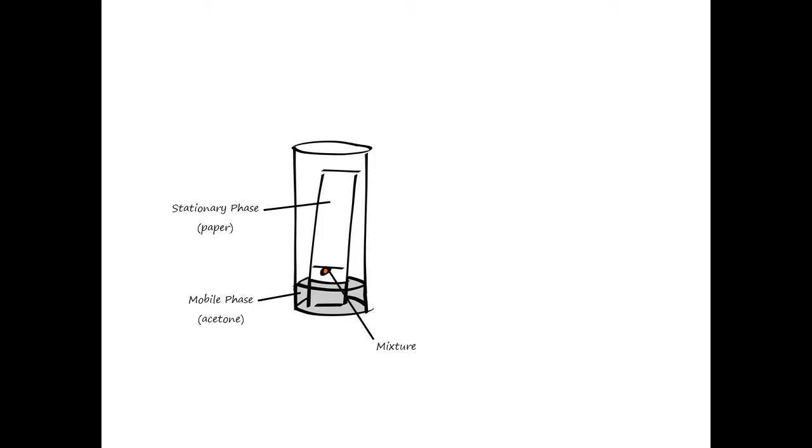The mixture starts at one end of the stationary phase. The mobile phase then moves from one end of the stationary phase to the other and carries the components of the mixture with it. Some components are more attracted to the mobile phase than others, so they move faster and farther.